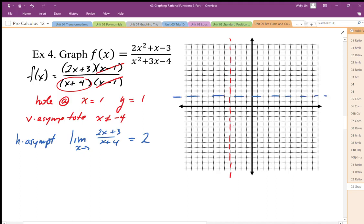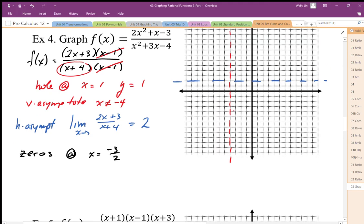Since now that I factored, and again factoring is a key here, now that I factored, I can find some coordinates. So I have zeros at x equals, well, this factor needs to be equal to zero. So it's going to be negative 3 over 2. Always the opposite sign, back divided by front. And the y-intercept coordinate that I'm looking for is x equals zero. And plugging in zero, I end up with y equals 3 over 4.